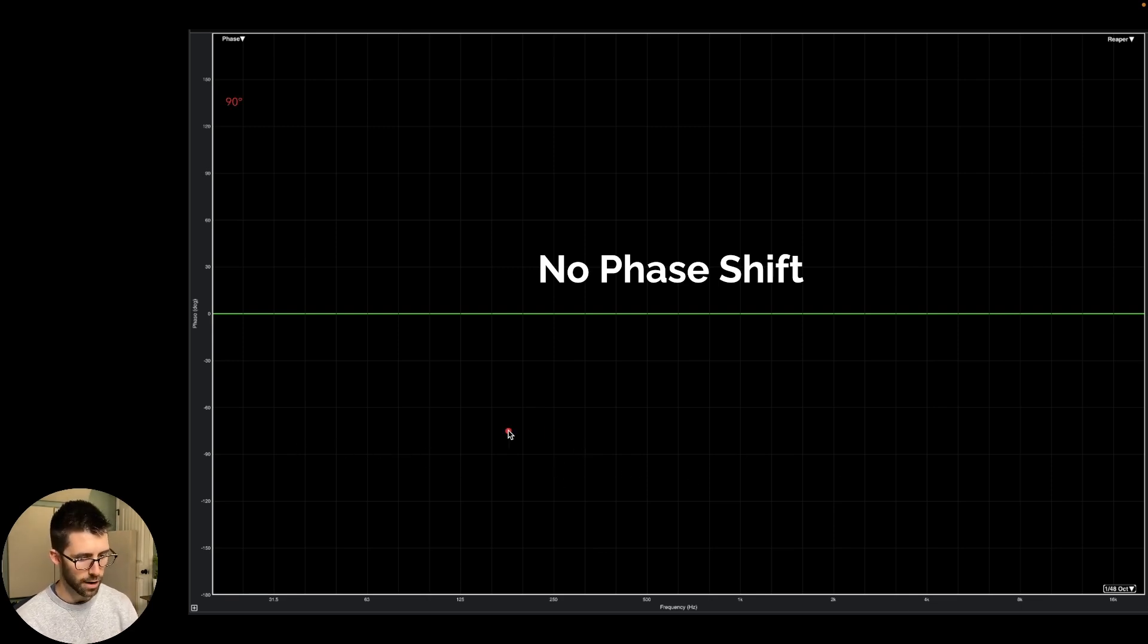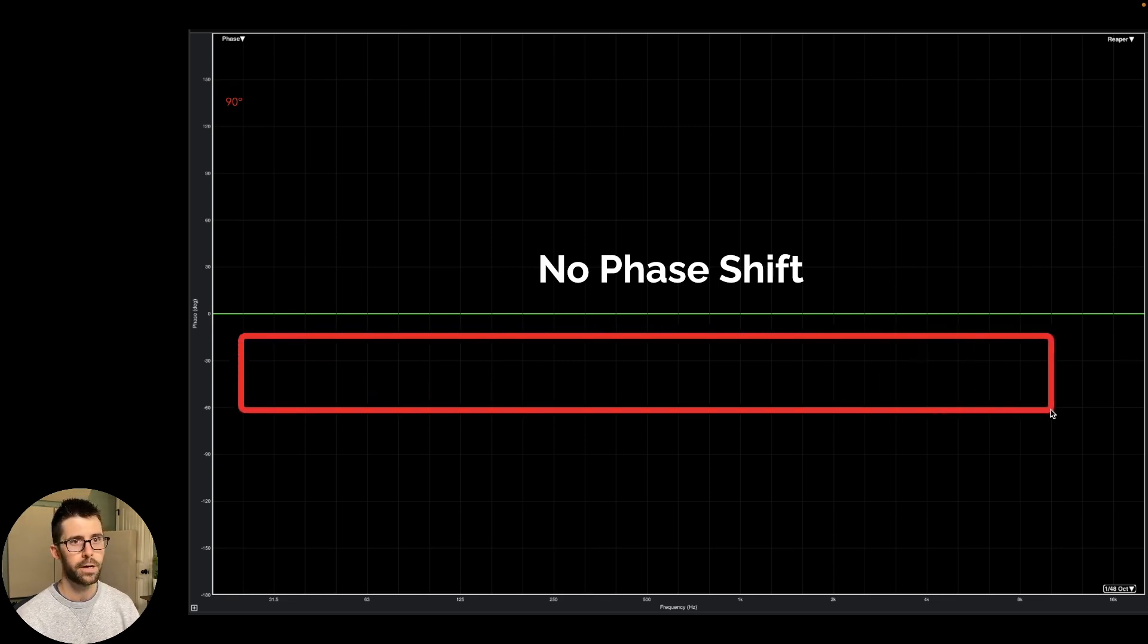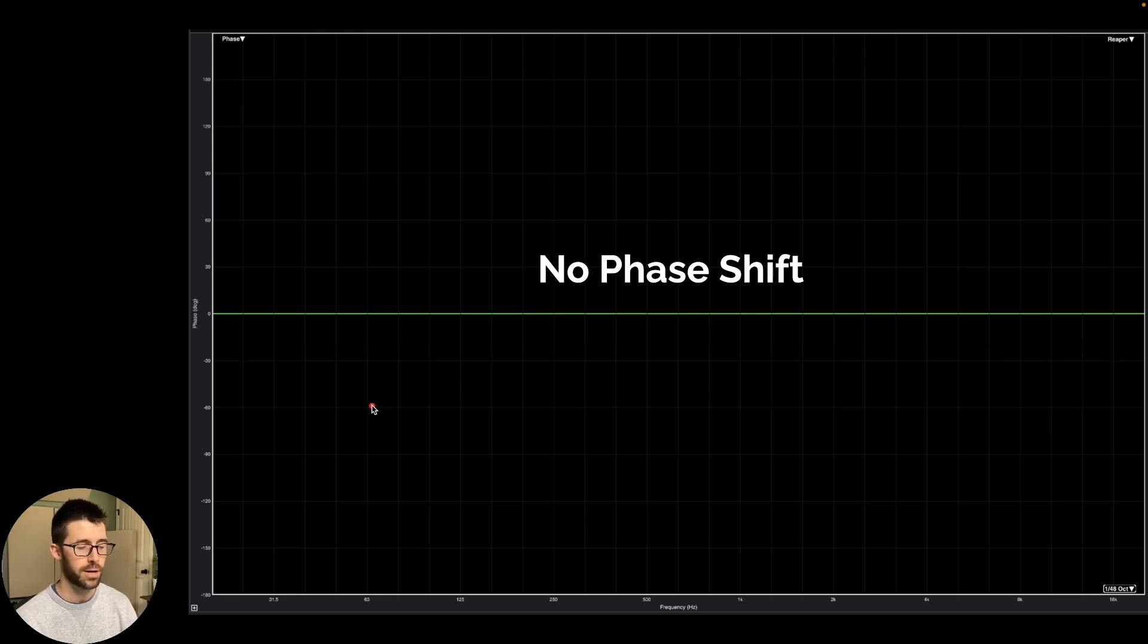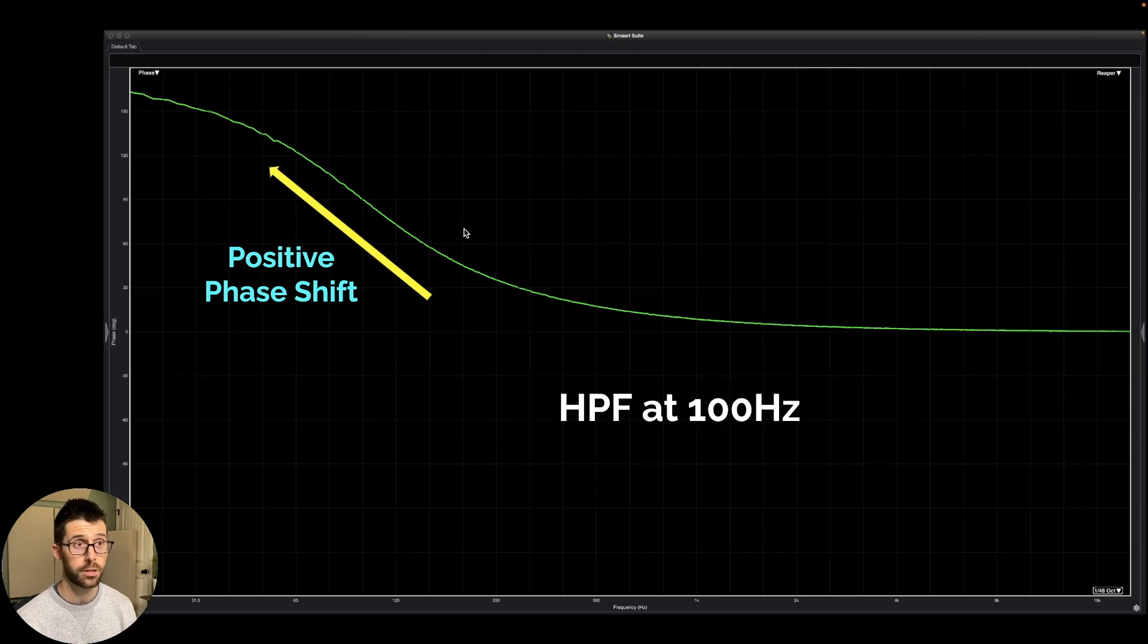So on our x-axis here, we have frequency. So this is the entire audible frequency spectrum here. We've got here from 20 hertz all the way up to 20k or close to it. And here we have our degrees. So here it goes zero up to 180 and then zero now moving negative.